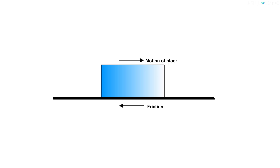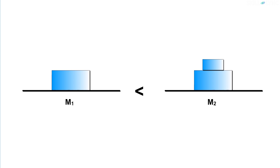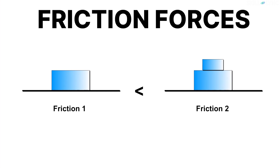Just as it states, the direction of friction in this scenario will be opposite to the direction of motion of the block at the point of contact between the two surfaces. Let's assume another case: we add another block of mass 0.5m on top of the box with mass m, increasing the combined mass to 1.5m. The set of boxes with greater mass tends to have higher frictional force opposing motion, because frictional force is directly proportional to mass — more the mass, more is the frictional force.